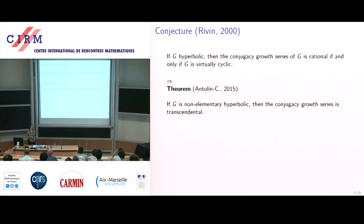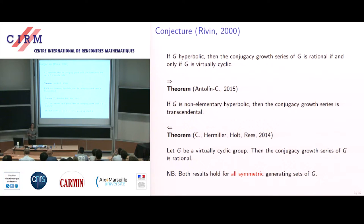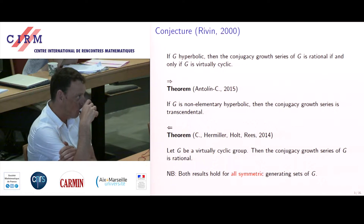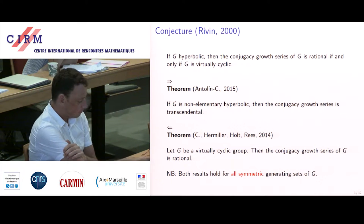I'll spend time on two directions. First: if the group is non-elementary hyperbolic — so not virtually cyclic — the conjugacy growth series is transcendental. Most of the work I'll discuss is joint with Iago Antolin from Vanderbilt. Last year, with Susan Hermiller, de Reho, and Sarah Rees, we proved that for the nicest, easiest hyperbolic groups — the virtually cyclic ones — the conjugacy growth series is indeed rational.